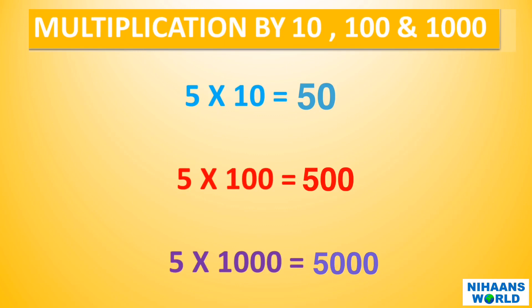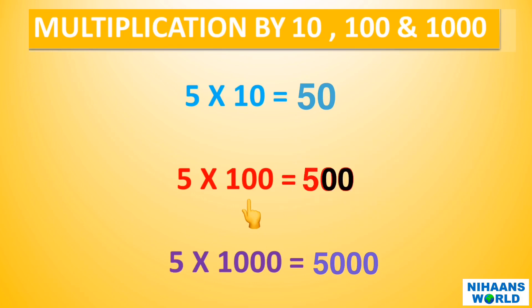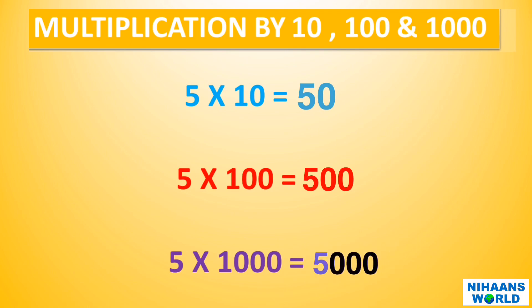When we multiply a number by 10, the product is the number with one 0 to the right. When we multiply a number by 100, the product is the number with two 0s to its right. When we multiply a number by 1,000, the product is the number with three 0s to its right.